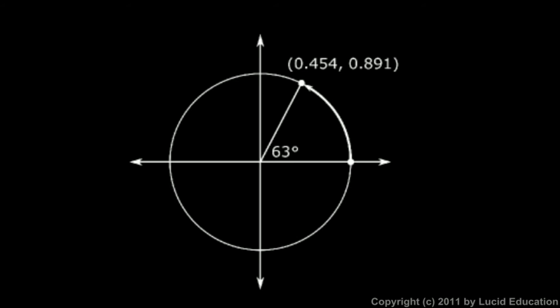Just as an example, I've picked a 63 degree angle. If we start here and rotate through 63 degrees, that puts us at this point, which has an x-coordinate of 0.454 and a y-coordinate of 0.891.